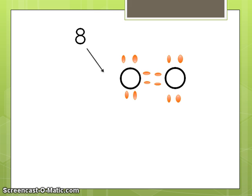So here we have 2 stabilized oxygen atoms now that they have 8 electrons. 1, 2, 3, 4, 5, 6, 7, 8. 1, 2, 3, 4, 5, 6, 7, 8.